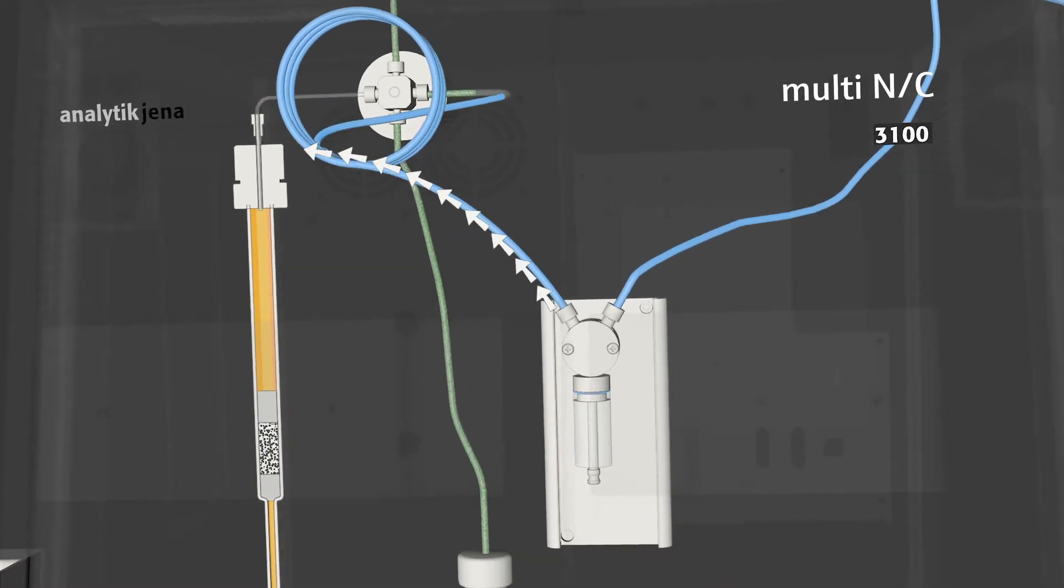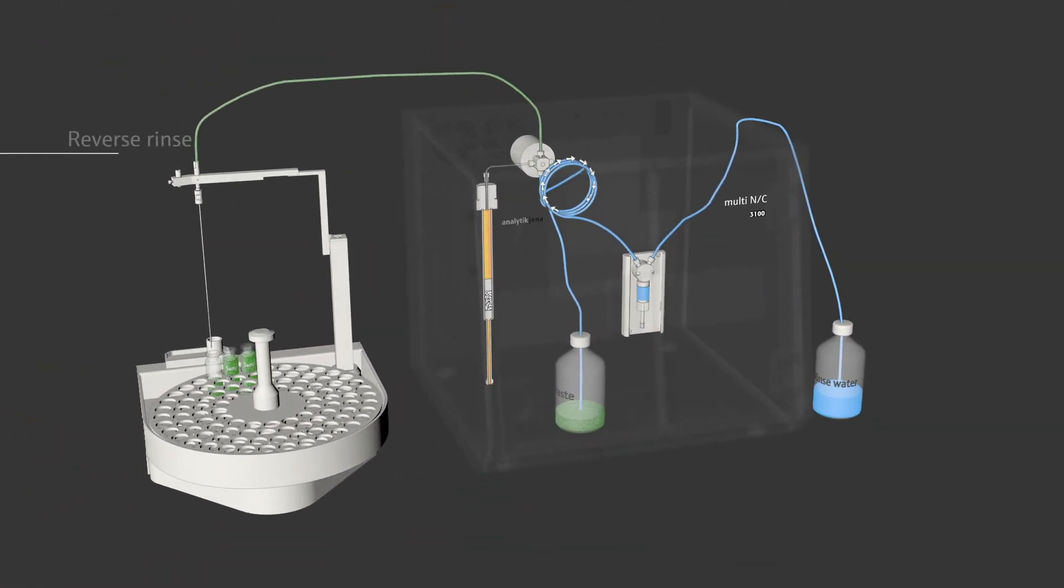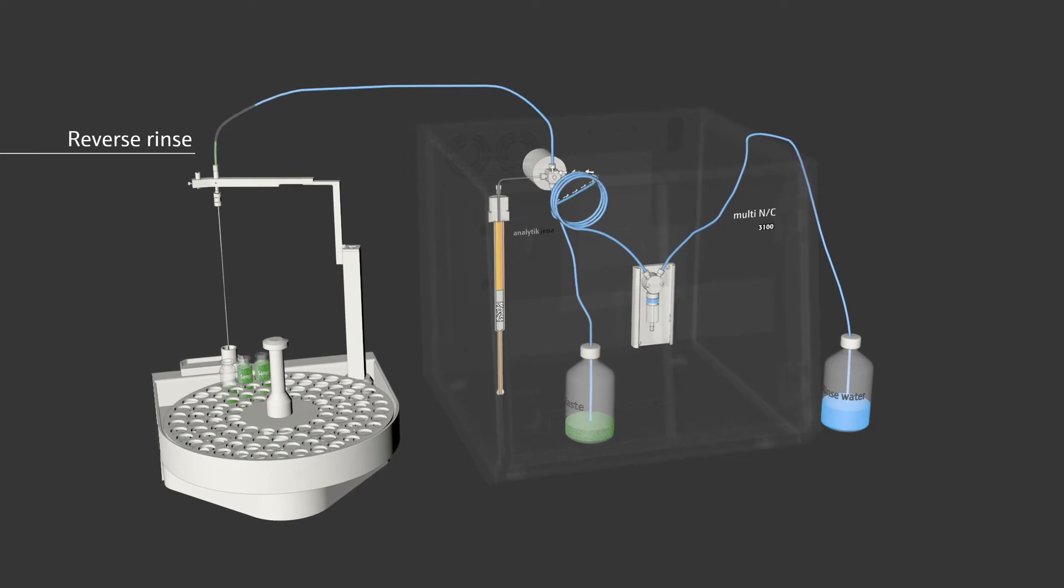The injection needle and valve are effectively rinsed. This is followed by the reverse rinse of the sample aspiration tube and needle into the auto sampler rinse station for full carryover control.